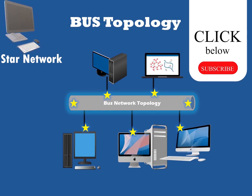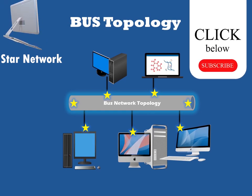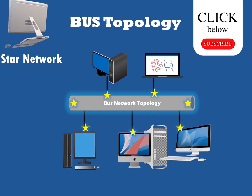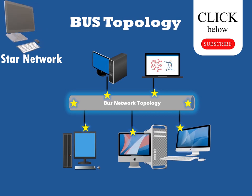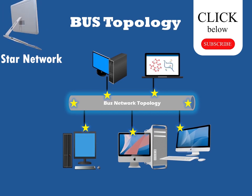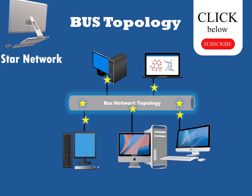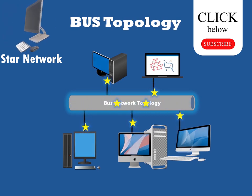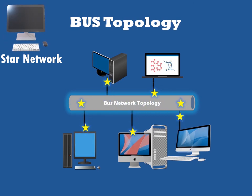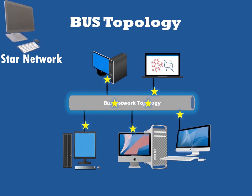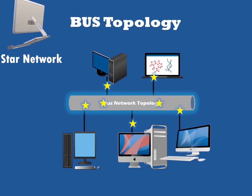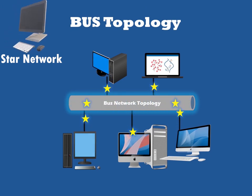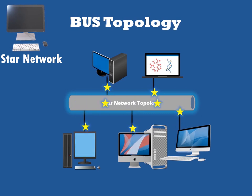Topologies define the structure of the network — how all the components are interconnected to each other. There are two types of topology: physical and logical topology. Physical topology is the geometric representation of all the nodes in a network.